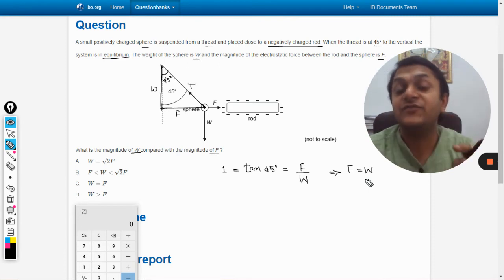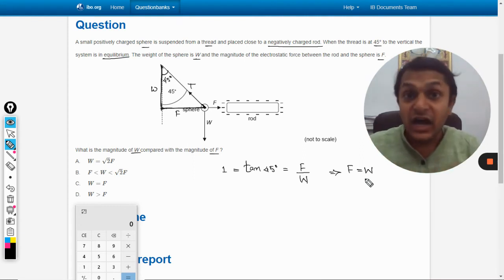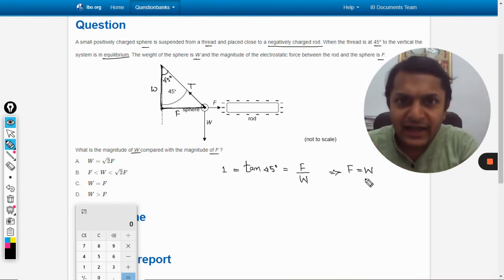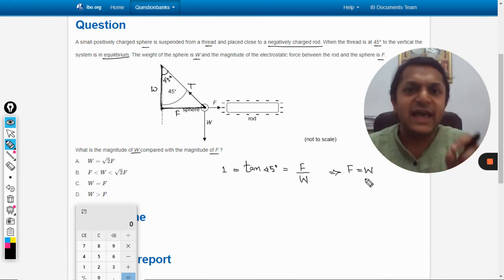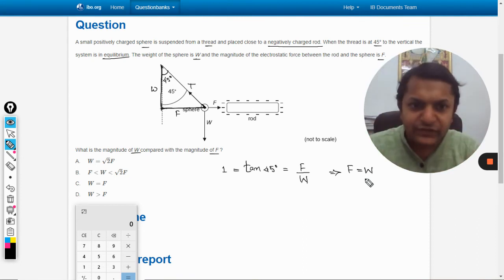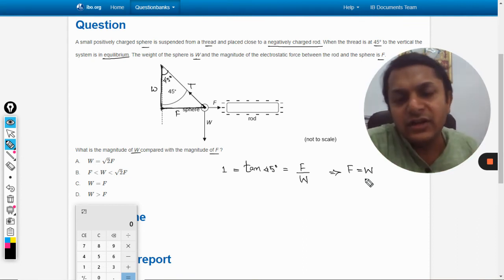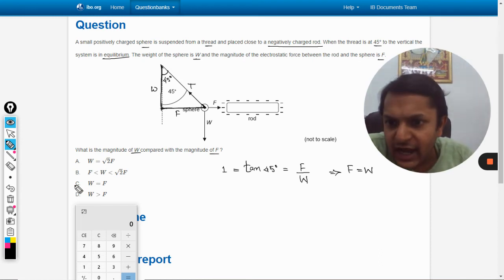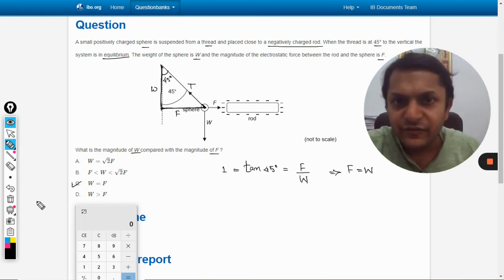The force triangle will be similar to the geometry triangle. This condition is valid only if equilibrium is present, and equilibrium occurs only at 45 degrees. At 45 degrees, F equals W, and the answer should be C. Let's check the mark scheme - yes, the answer is C.